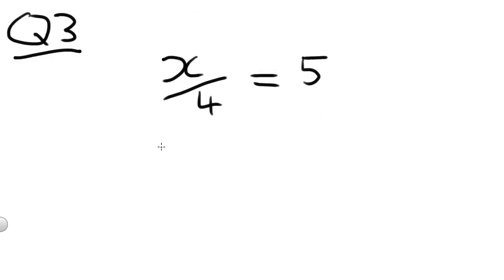Question 3. X over 4 equals 5. Now if you know your fractions, X over 4 is the same as saying X divided by 4. So X over 4 equals 5. To get rid of that 4, well because it's a divide by 4, the opposite of divide is multiply. So X divided by 4 times 4 is just X.